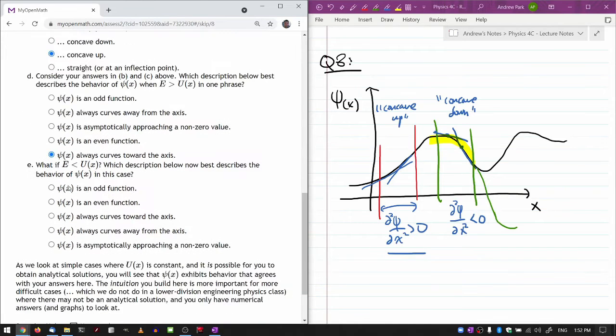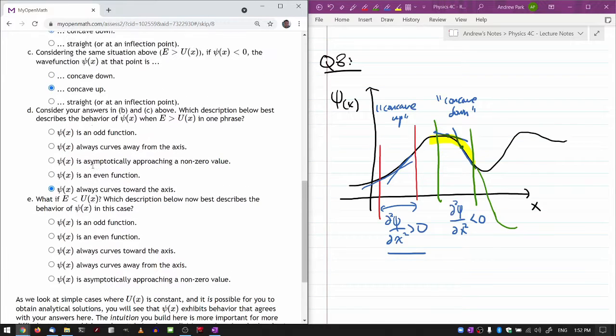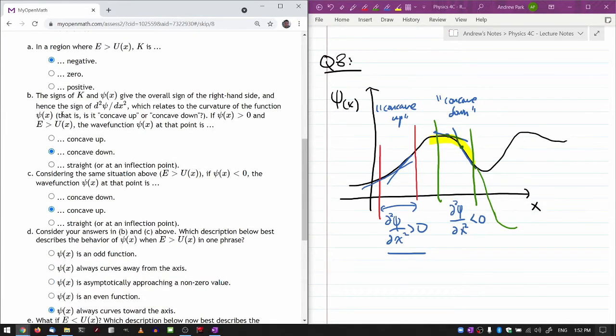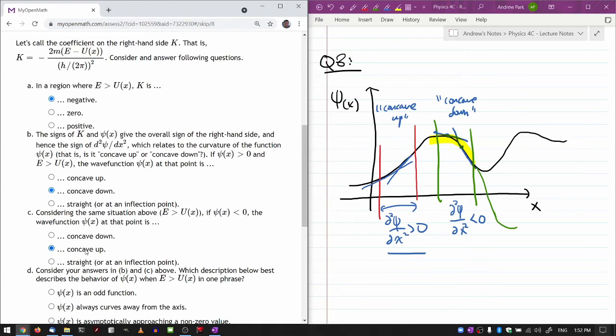Okay, what if the total energy is less than the potential energy? Then what I think you should do is work through the equivalent of B and C again. Your answer to A would be negative—sorry, positive.